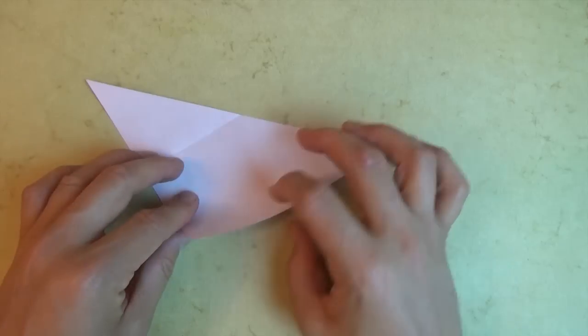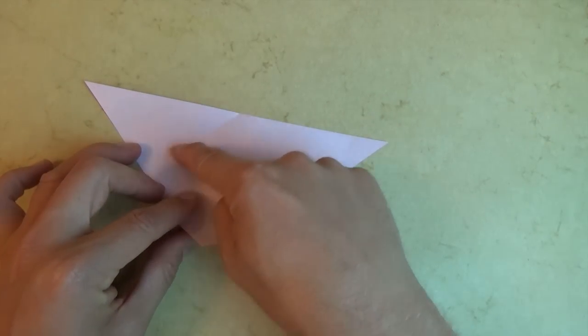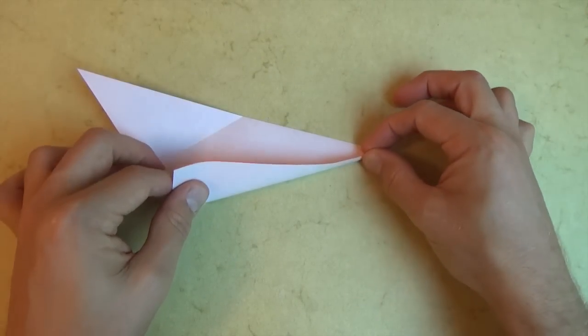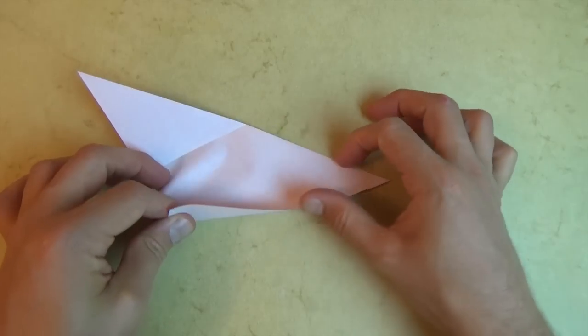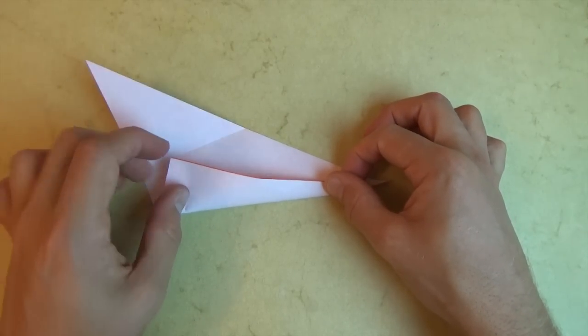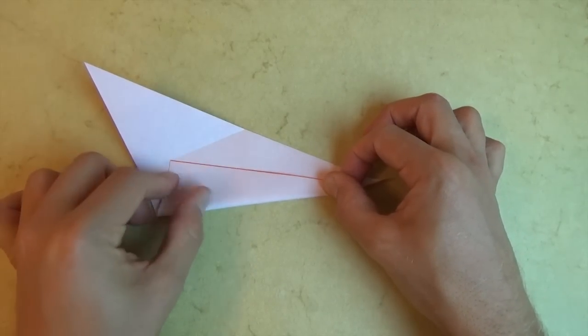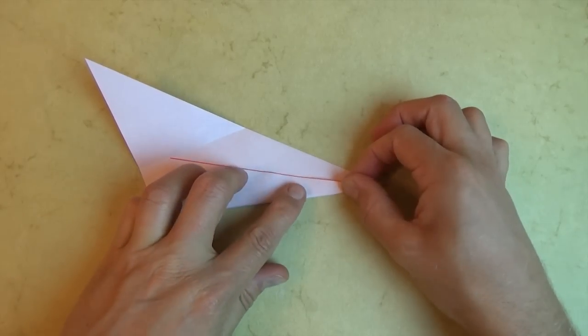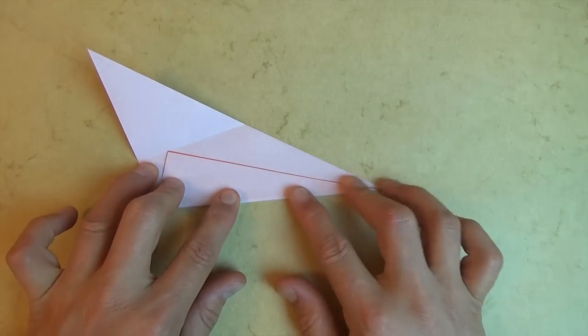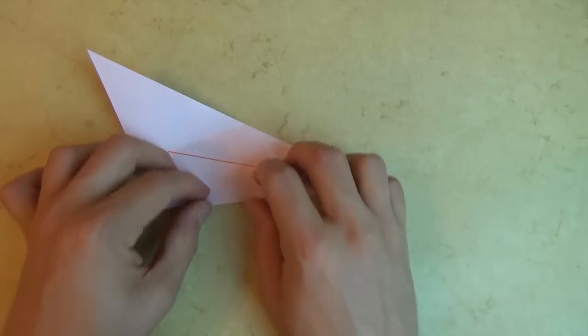And now we're going to fold this corner to the crease, but we're going to make the fold originate right here. So fold this edge up so that this corner touches the crease. Like that.